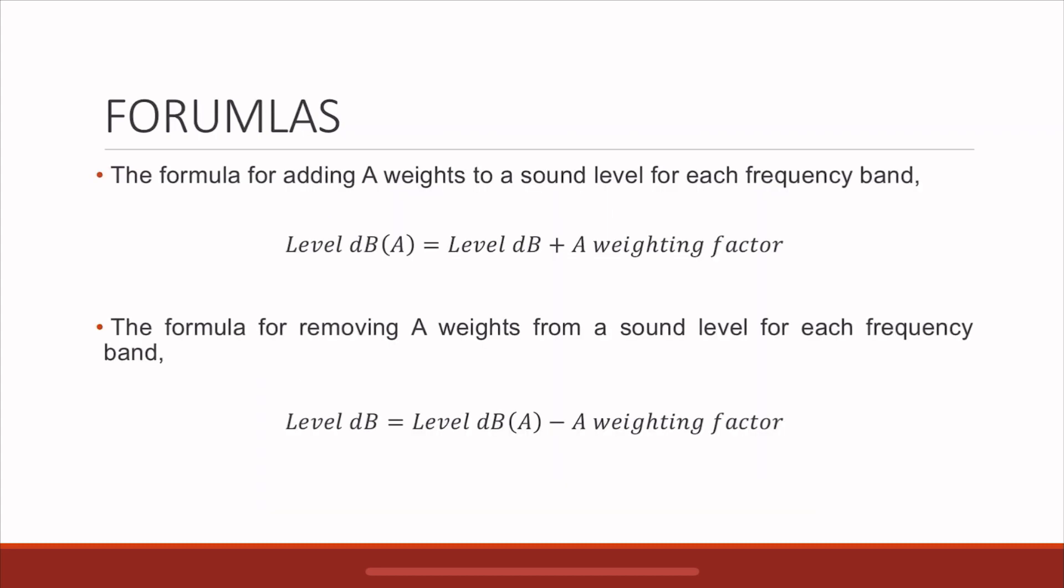How do you convert a level from unweighted to A-weighting? You simply add the A-weighting factor. If you have a sound pressure level in decibels, you need to add the A-weighting factor. The key thing to note is that it's not a single value. It's only applicable for a band of frequency, so for each frequency band you need to do this. You can't do it for an overall level. You have to do it for each frequency band and then add it up logarithmically.